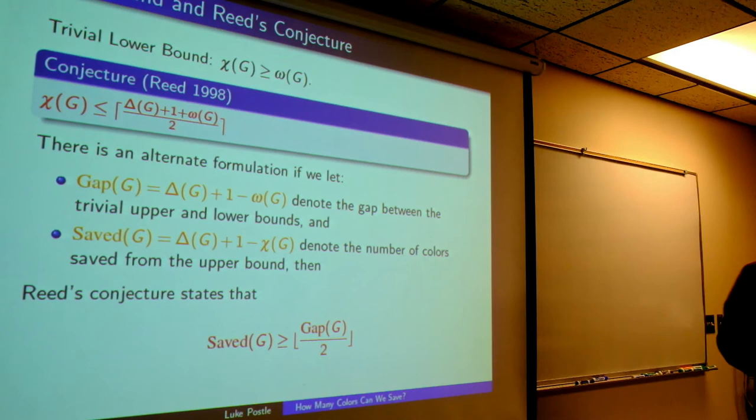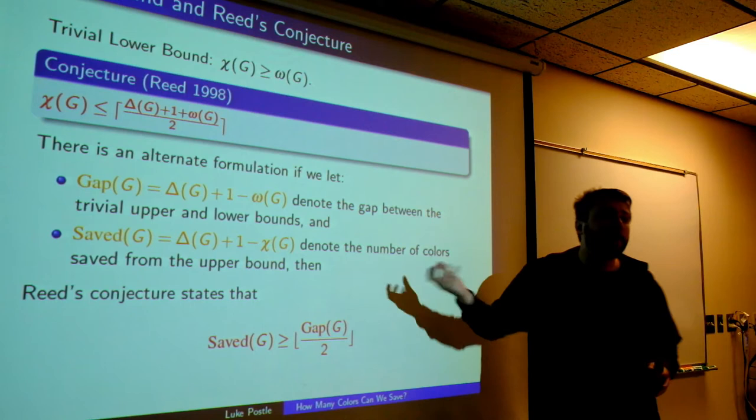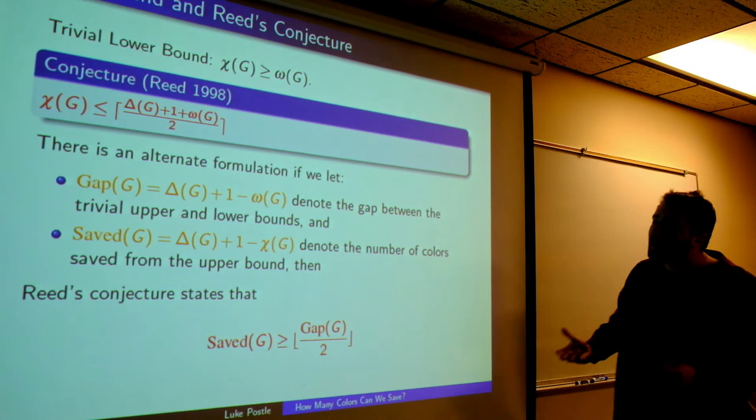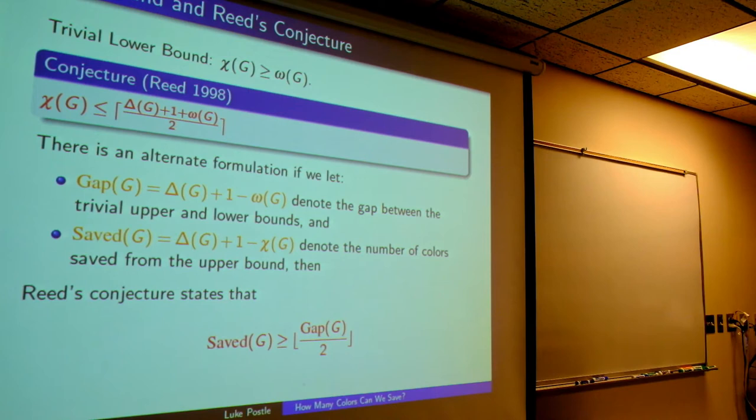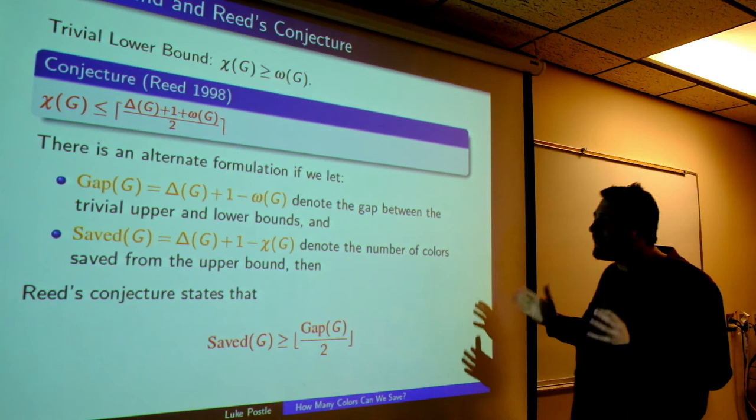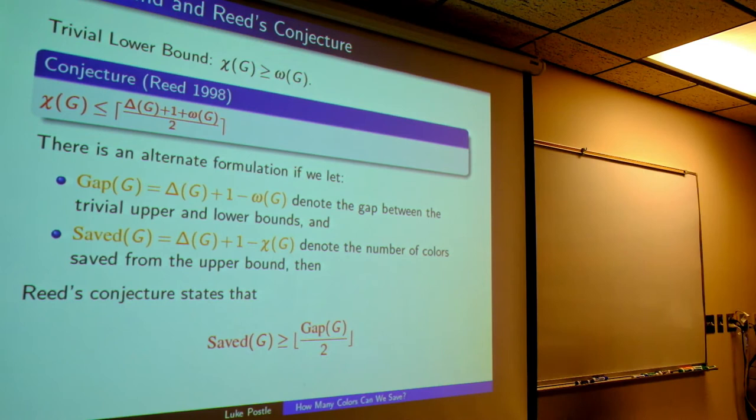Let's define "save" to be delta plus 1 minus chi — the amount of colors we'd like to save from the trivial upper bound. Then Reed's conjecture says: saved is at least gap over 2. So we have this gap between the upper and lower bounds, and Reed is saying we can save at least half of that. Brooks' theorem tells us when we can save 1, but this is saying we can save a lot.